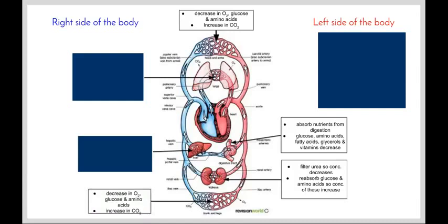The trunk and the legs, so the bottom half of our body is exactly the same as the top half of our body. Lots of muscles and things that need to constantly be moving in order to help us move. So there will be a decrease in oxygen, glucose, and amino acids. Oxygen and glucose being used for cellular respiration, an increase in carbon dioxide as a byproduct.